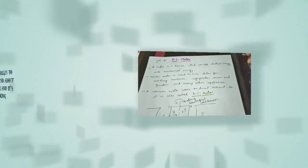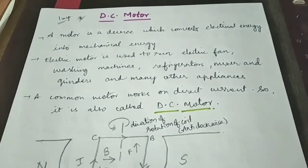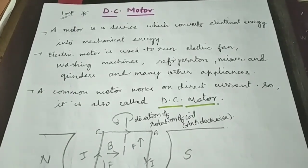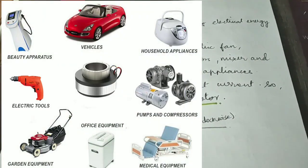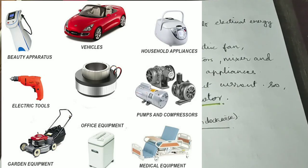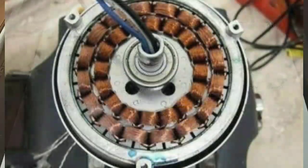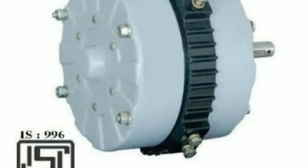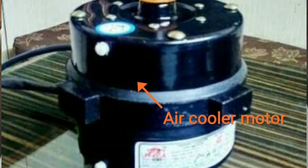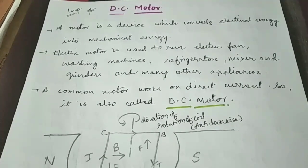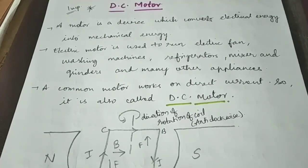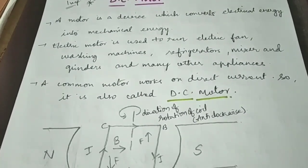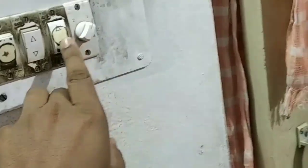DC motor is a device which converts electrical energy into mechanical energy. Motors are being used everywhere in our electrical appliances like fans, coolers, water pumps, etc. This motor converts electrical energy into mechanical energy — you provide electrical energy to it and it converts into mechanical energy.